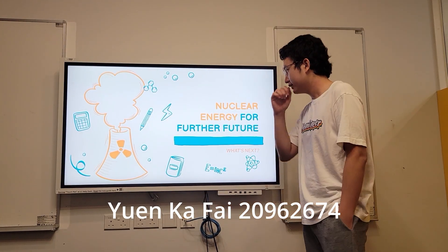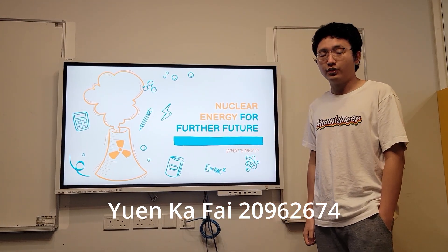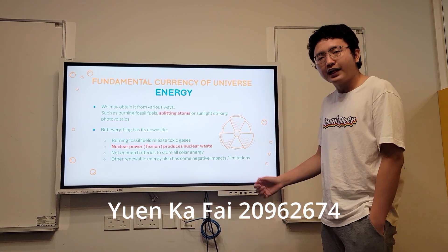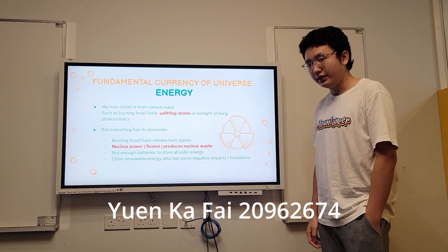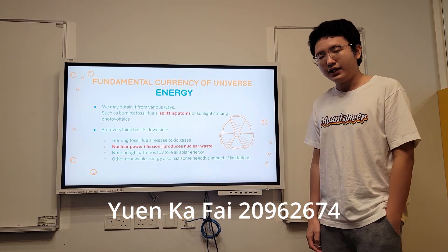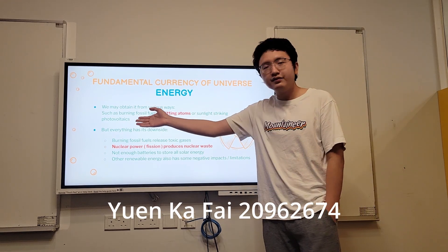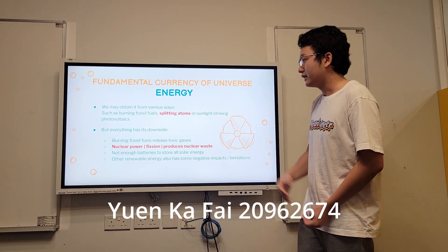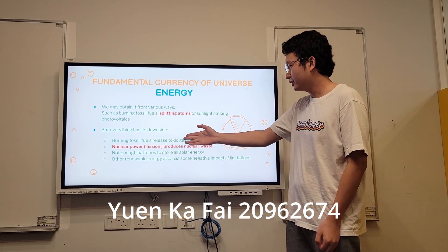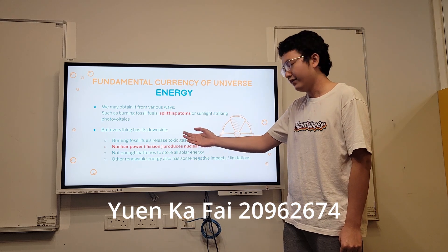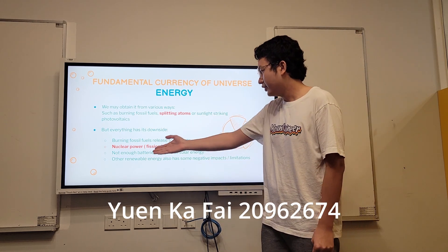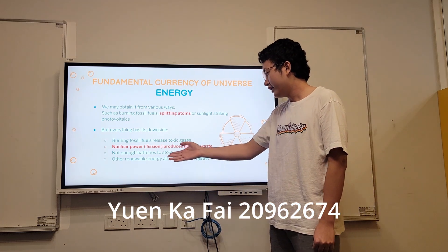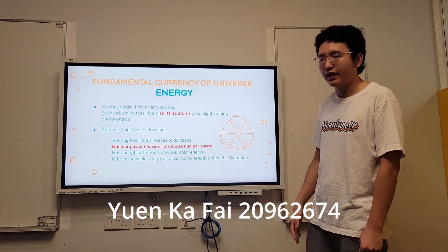Now let's talk about the future of nuclear energy. The fundamental currency of the universe is energy — we can do nothing without it. We obtain it from various sources: burning fossil fuels, splitting atoms, or sunlight striking photovoltaics. But everything has its downside — fossil fuels release toxic gases, nuclear power produces nuclear waste, and batteries cannot store all solar energy. Other renewable energies also have limitations we must consider.